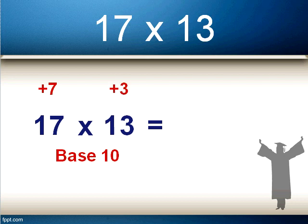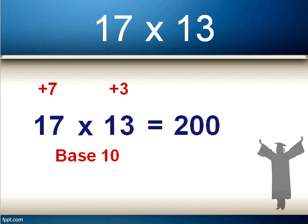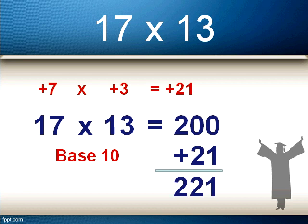The first step to finding our answer is a cross addition: either add the 7 to the 13, or the 3 to the 17 — both give us 20. As we're using base 10, this becomes 200. The second step is to multiply the two top numbers in red together: 7 times 3 is 21. We add that to the step one result: 200 plus 21 equals 221.